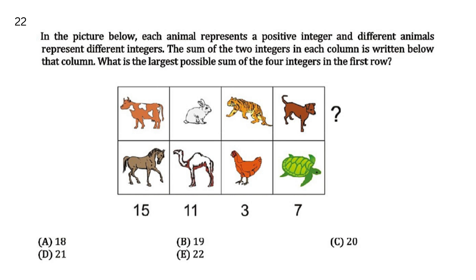Your options are A 18, B 19, C 20, D 21, E 22. Your answer is C 20, as explained.